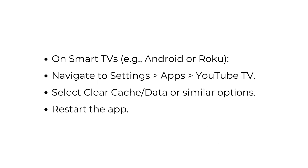On Smart TVs — Android or Roku — navigate to Settings > Apps > YouTube TV. Select Clear Cache, Data, or similar options. Restart the app.